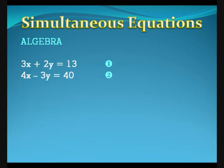Now consider an example where we would have to change both equations. 3x plus 2y equals 13, and 4x minus 3y equals 40. Call these equations 1 and 2.